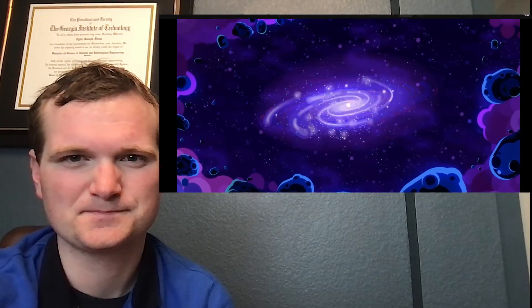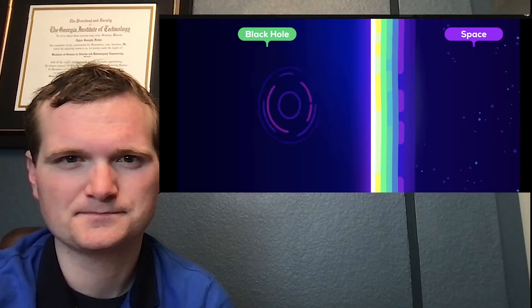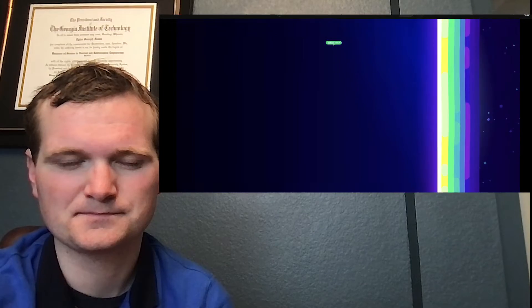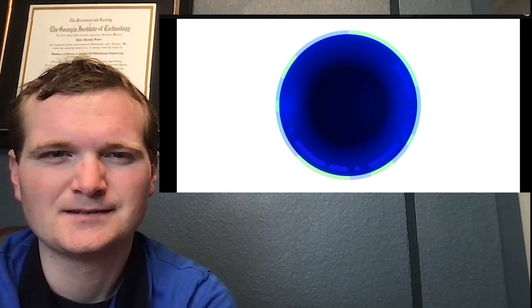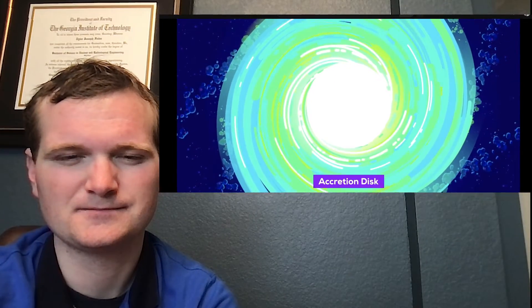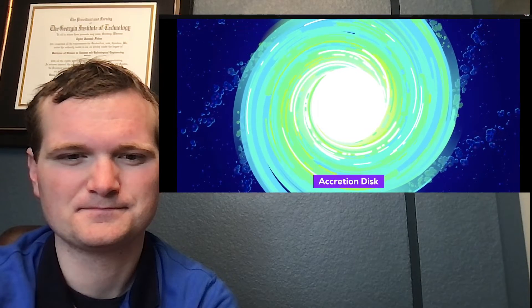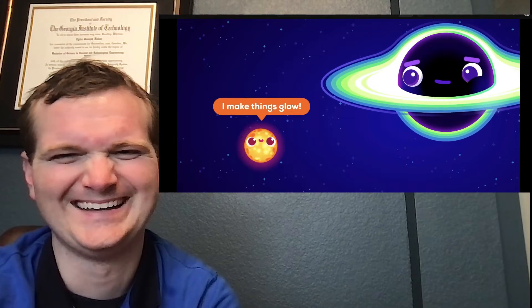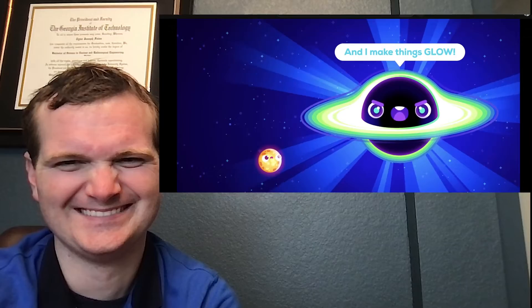We still don't know how exactly they formed, but it seems that every galaxy has one in their center. But how can the brightest things in the universe be black holes, which trap anything and everything that crosses their event horizon? Well, the light of a quasar is not coming from inside these black holes. Rather, it comes from the space around them, a massive orbiting disk of gas called an accretion disk. Quasars use the same fuel as stars to shine: matter.